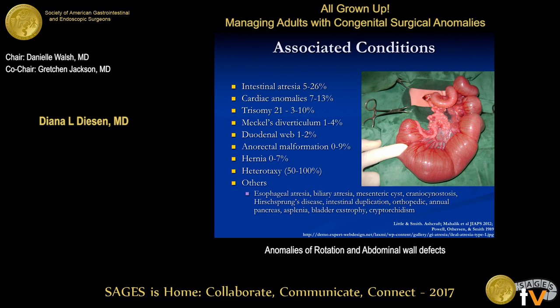Malrotation is also found in many other anomalies — intestinal atresia, cardiac anomalies, trisomy 21, anorectal malformations, and heterotaxy. So a lot of these patients can have other anomalies as well. It's important to consider that when you're seeing a child with malrotation. Most of these would have been identified by the time they present to adulthood.